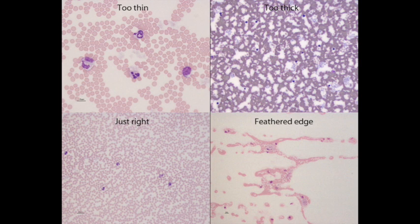In the lower left corner the field of view is just right. Notice that the red blood cells are what we call a mono layer which means none of them are overlapping. It's one cell thick and it's pretty uniform in distribution.